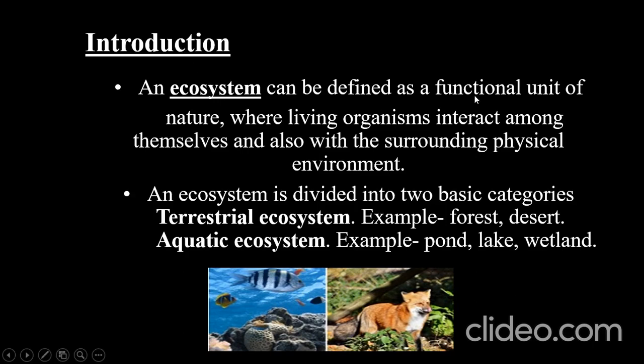Ecosystem can be defined as a functional unit of nature where living organisms interact among themselves and also with the surrounding physical environment. Think about our existence — can a living organism live alone without depending on other living organisms? We are in constant dependence on plants and other animals for food, and also on decomposers which help release nutrients from dead organic matter back into the environment.